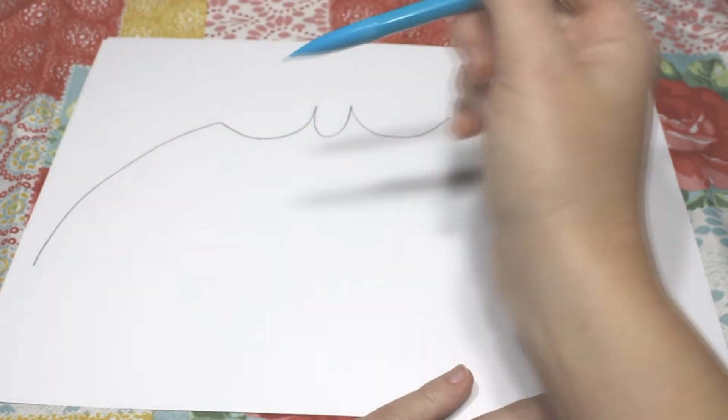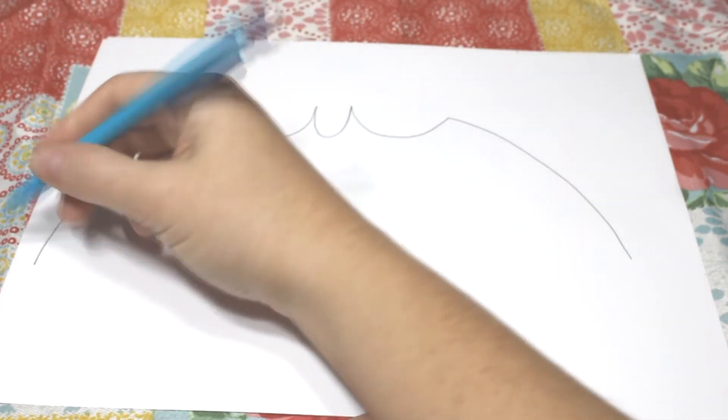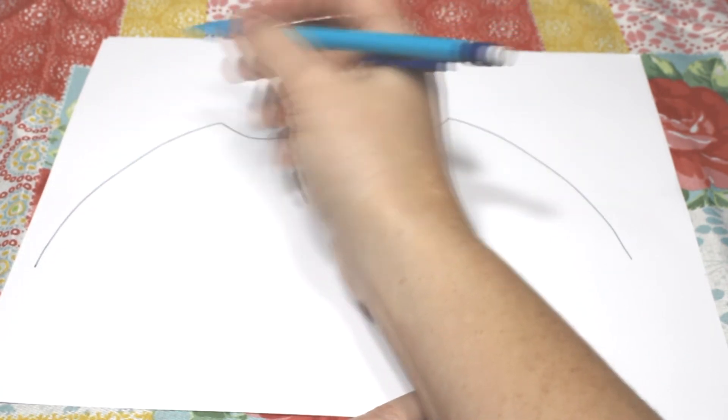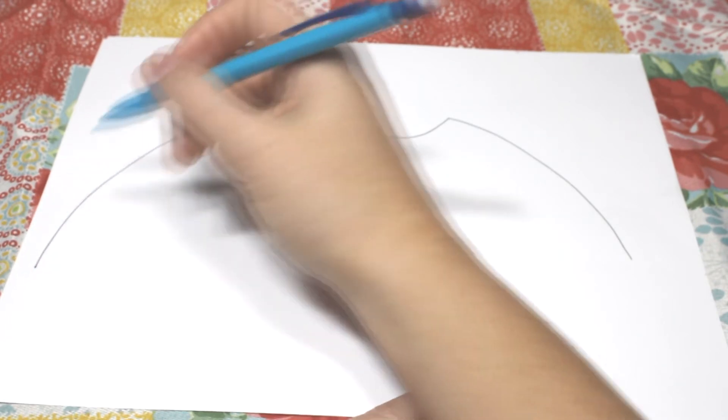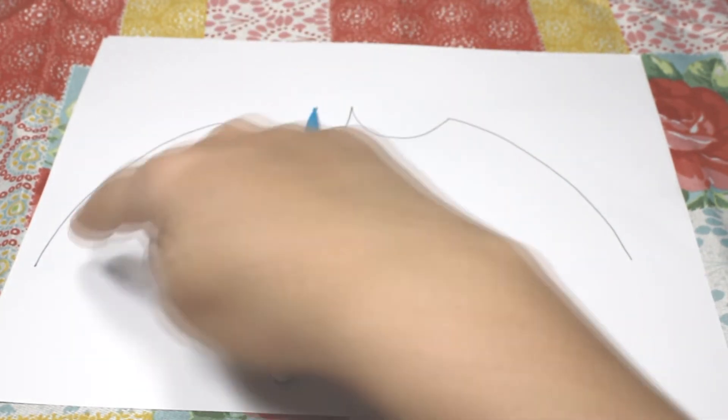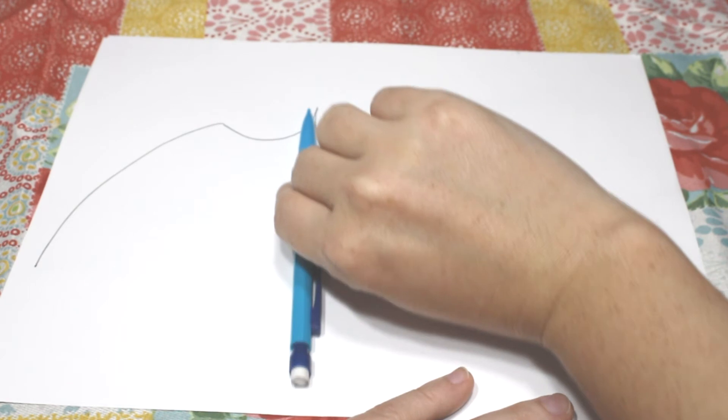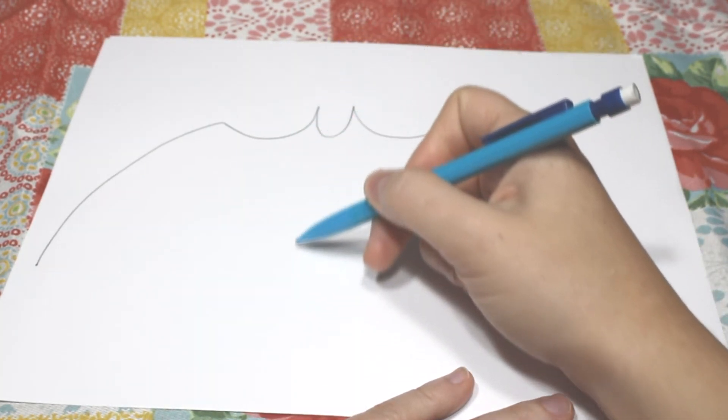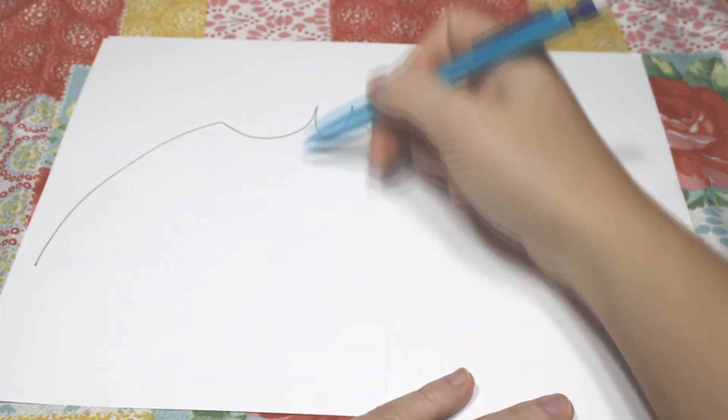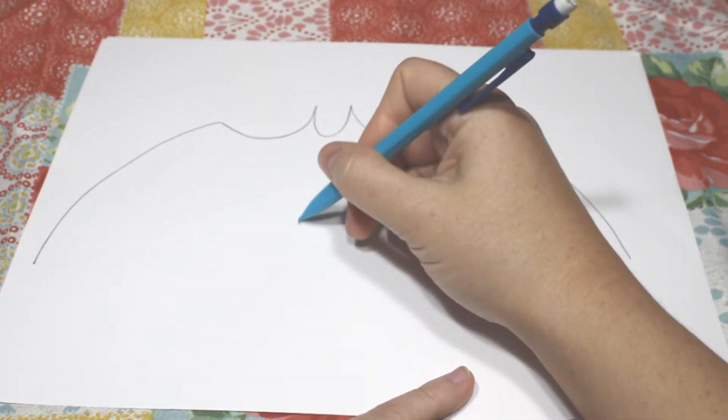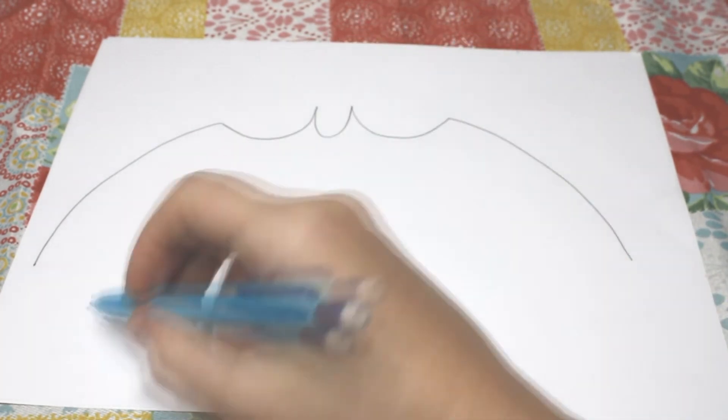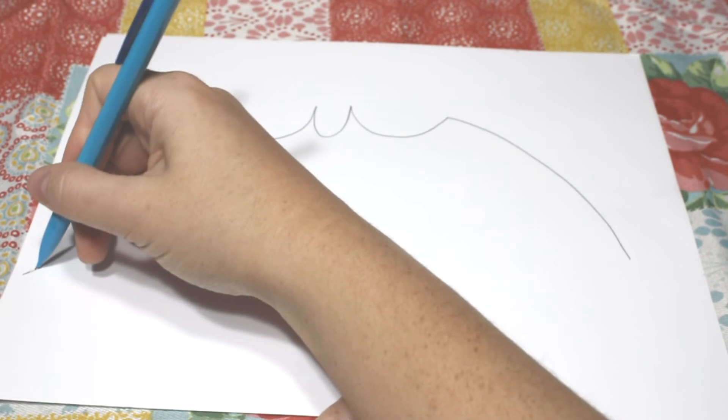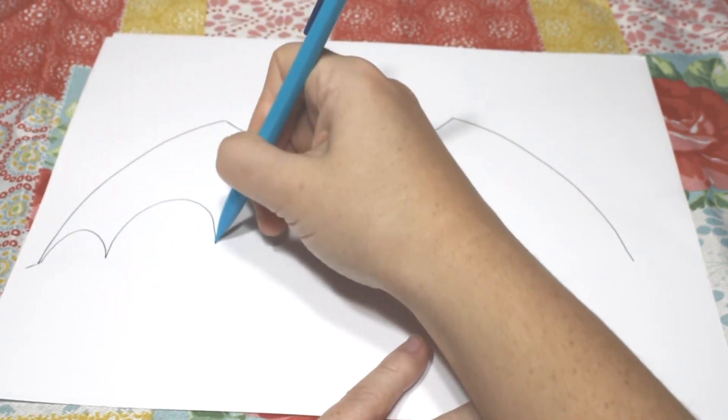Okay. Now we're gonna start at the very corner. Put a little dot. That's where your bumps need to stop. Okay, so you're going to go bump, bump, bump.